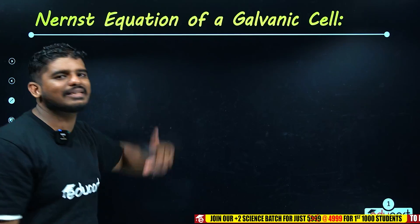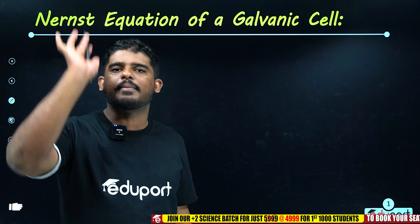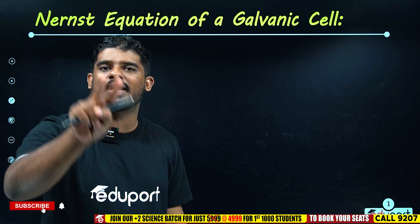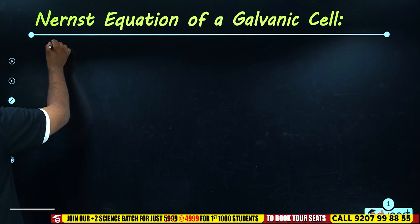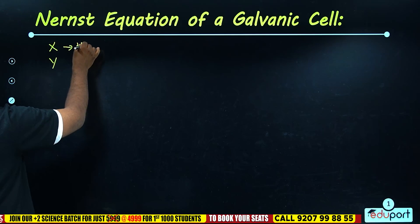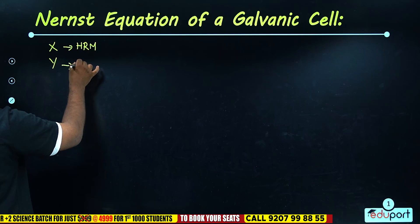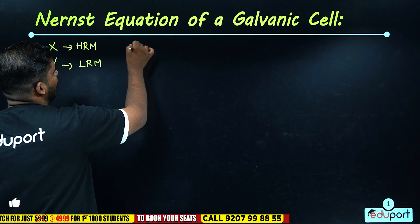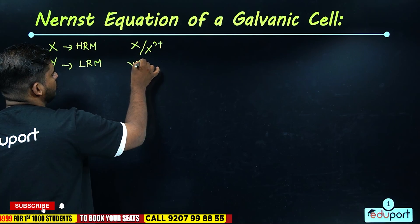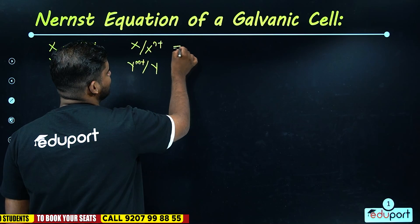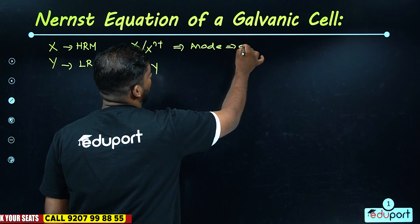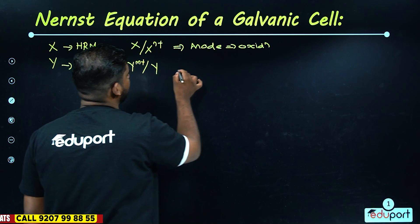In a galvanic cell, there are two metals, X and Y. X is a high-reactive metal and Y is a less-reactive metal. X forms an n-plus ion and Y forms an m-plus ion. The high-reactive metal X acts as the anode and undergoes oxidation.